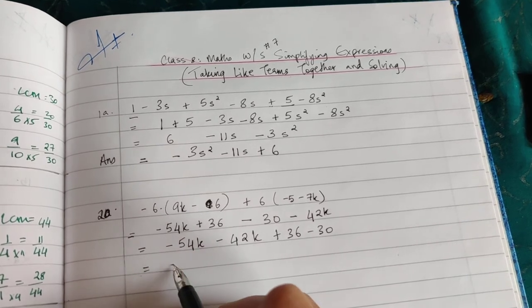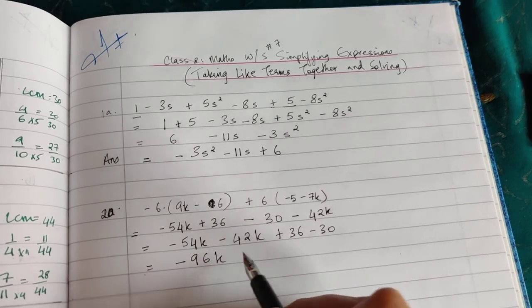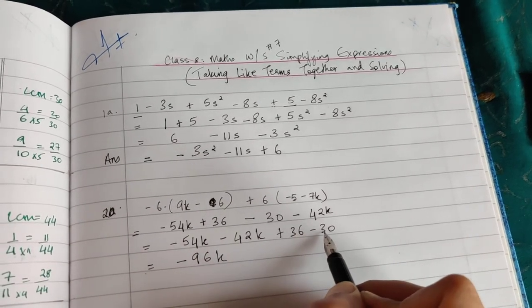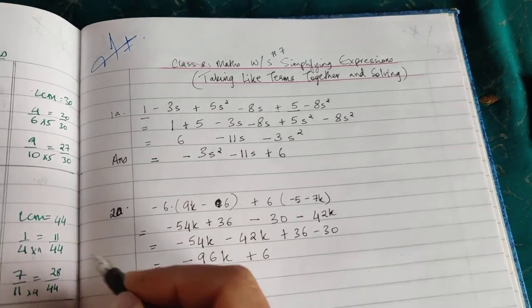-96k... 54, 42... and k. Plus 36 - 30, difference of the two, 6. Bigger sign there. There you go, this is your answer: -96k + 6.